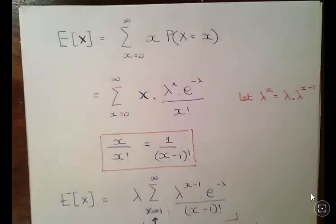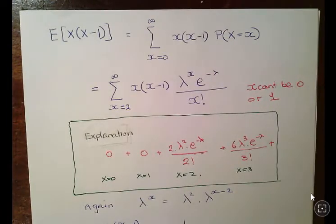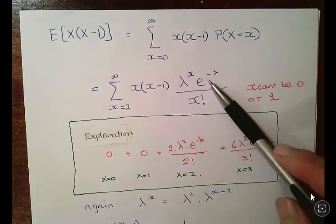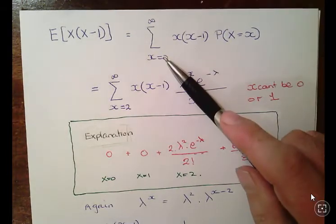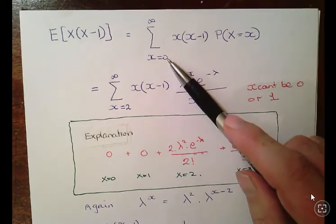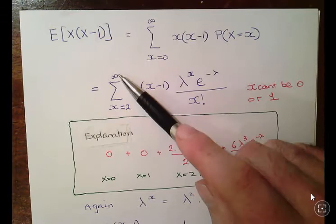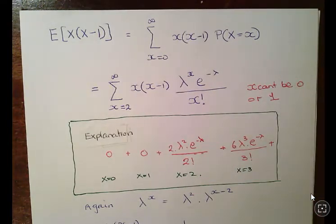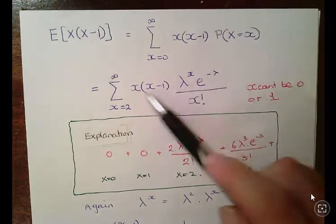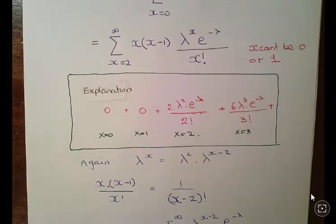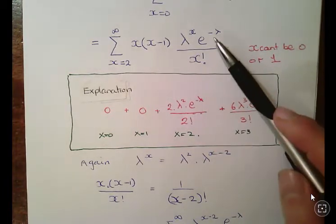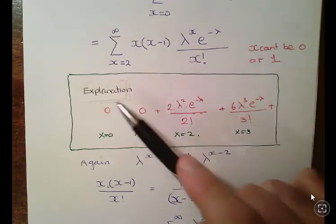Now for the expected value of x times x minus 1 — we'll do something very similar. A remark: we adjust the sample space to x equal to 2 to infinity, because x can't equal 0 or 1 in this context — otherwise we'd get 0 probability terms. If x equals 0 you get 0 times minus 1, and if x equals 1 you get 1 times 0. In other cases you could get negative probabilities, which aren't allowed, so you have to exclude them.